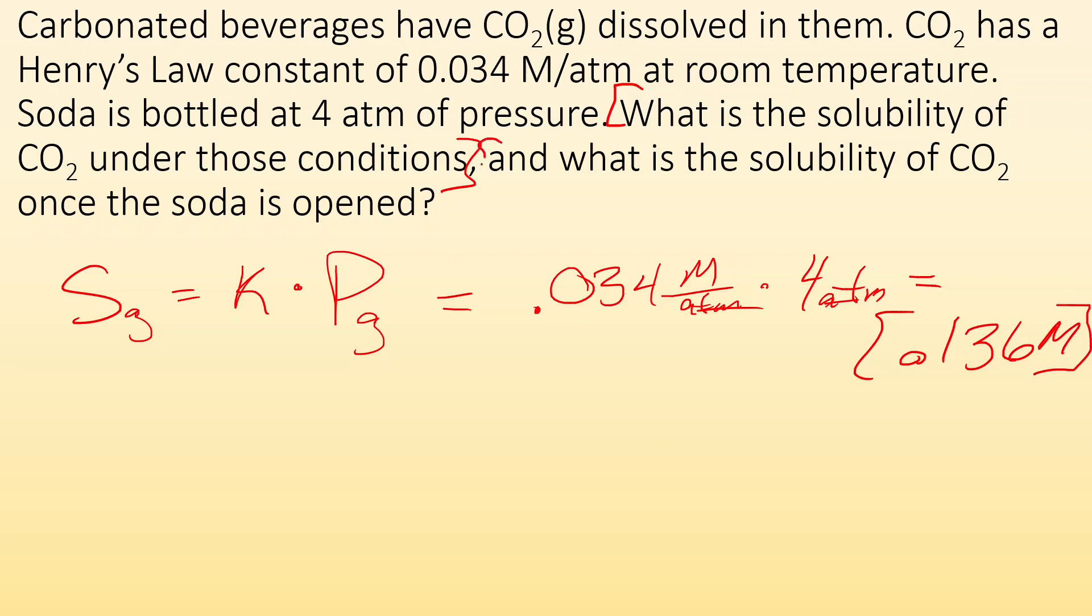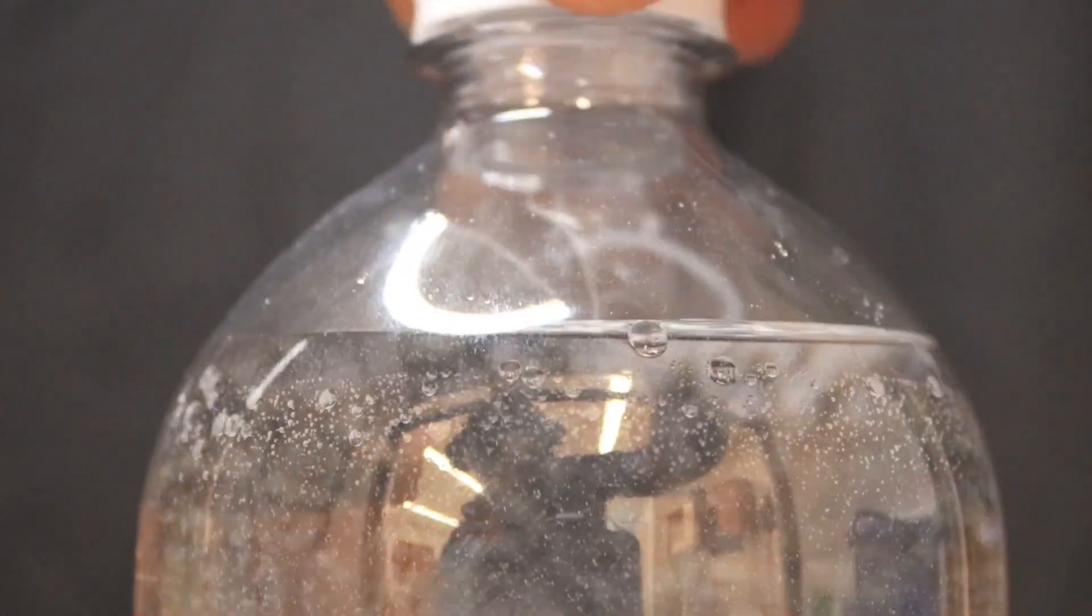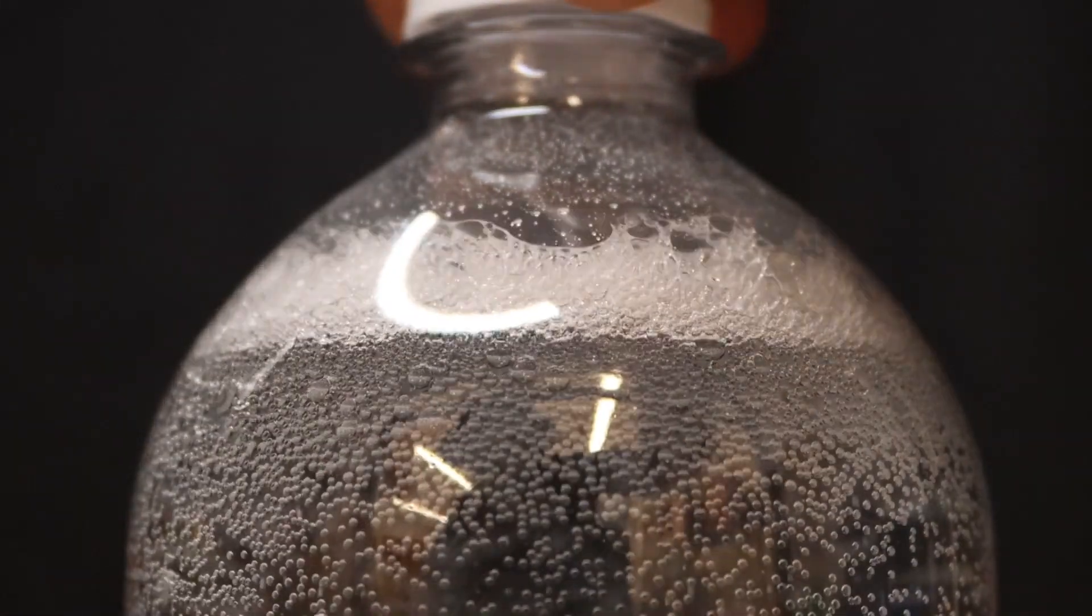Follow-up question: what would the solubility be after the soda is opened? Same equation, but this time the pressure isn't 4 atmospheres, it's only 1 atmosphere. So we end up with 0.034 molar, which means when we open it we go from high concentration to low. Where is that CO2 going to go? It's not going to precipitate out like a solid does. It's going to bubble up like a gas would. You open up a bottle of soda and what happens with all that extra dissolved CO2? It forms bubbles.